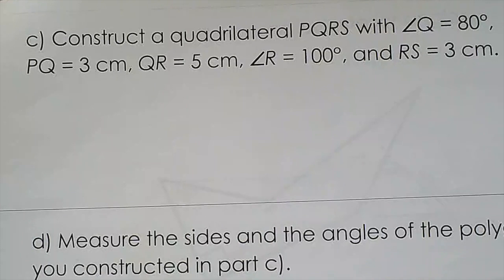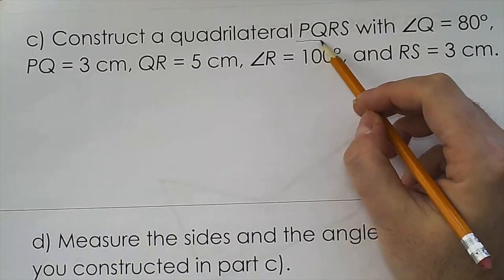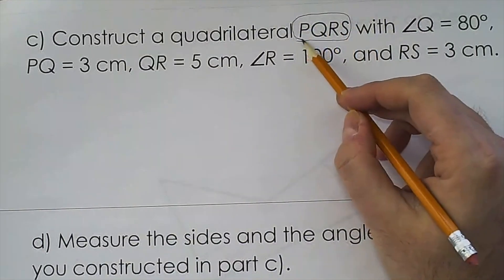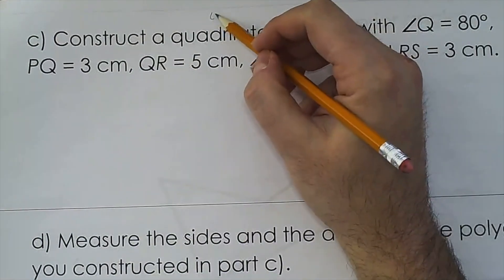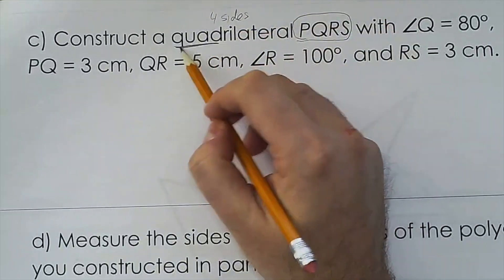So we're constructing a quadrilateral now, and this is the name of the quadrilateral, the points. And there are four, because the quadrilateral has four sides. Okay, that comes from the quad.